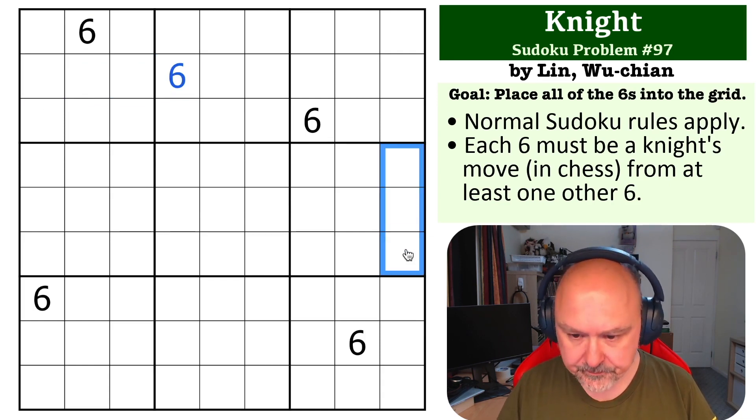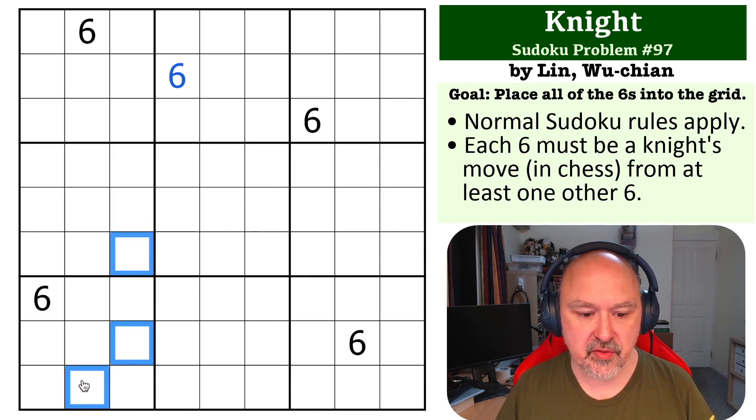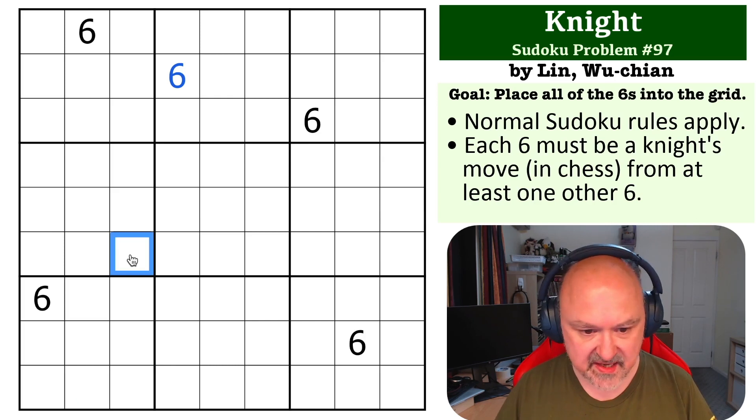Now, if we look down here, actually I'm going to jump to this one first. This six can only see, what is it? That cell, that cell, that cell, and that cell by knight's move. Those two are eliminated in the column, that one in the box. So this becomes a six.